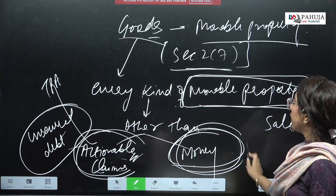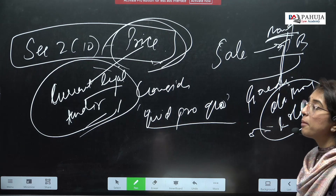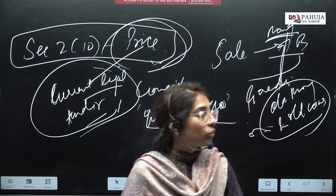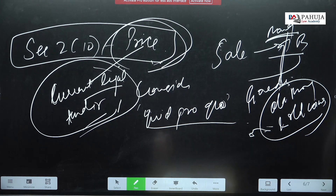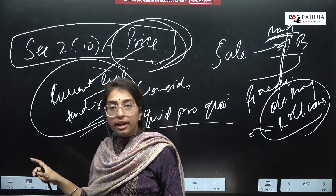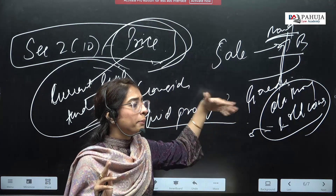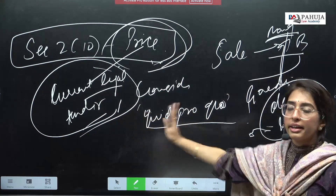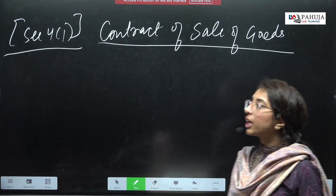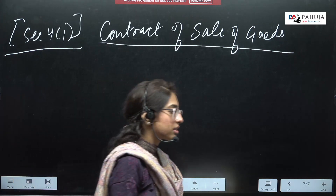Then we understood money. Without consideration, sale won't happen. So instead of 'money', what word does SOGA use? Price — defined in Section 2 Clause 10. Price is the current legal tender, meaning money that currently holds legal value. This is the consideration in SOGA. Now I've come to the contract of sale of goods, because we have understood the meaning of both 'sale' and 'goods'.